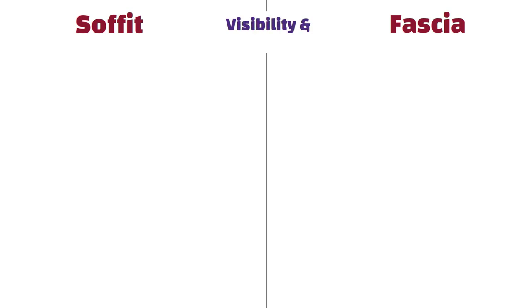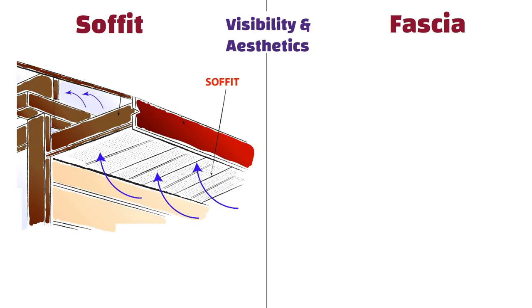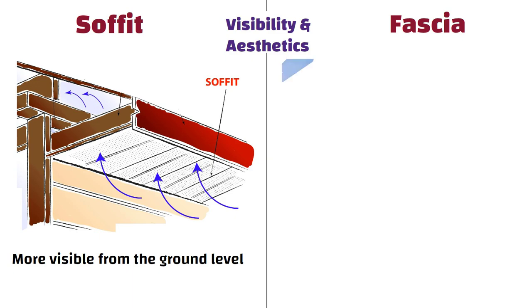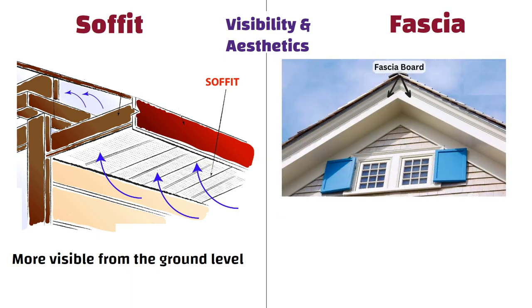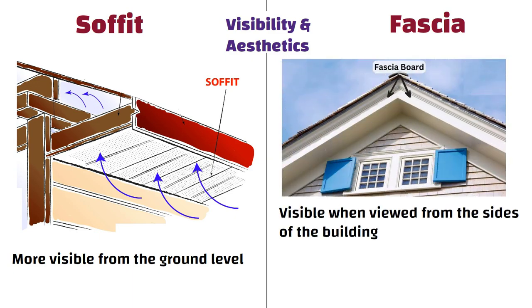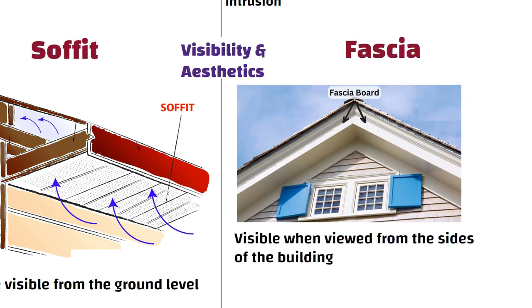Visibility and Aesthetics: Soffit is usually more visible from ground level, especially if there is an overhang on the roof. Whereas fascia is more visible when viewed from the sides of the building.